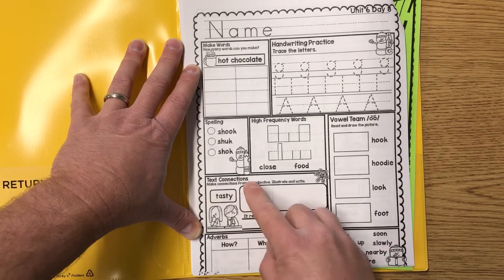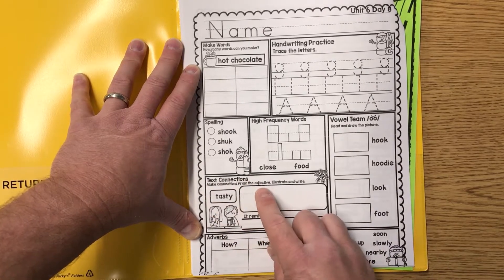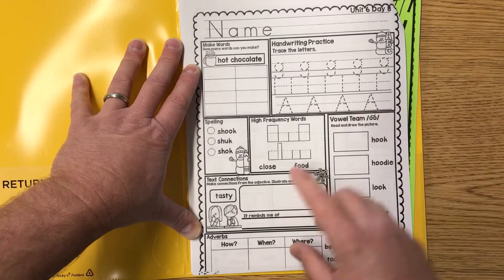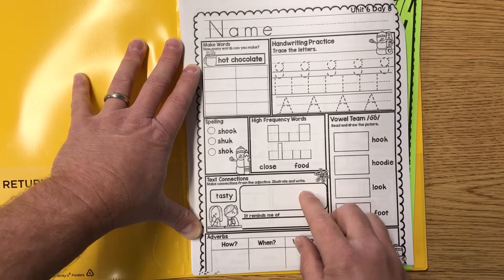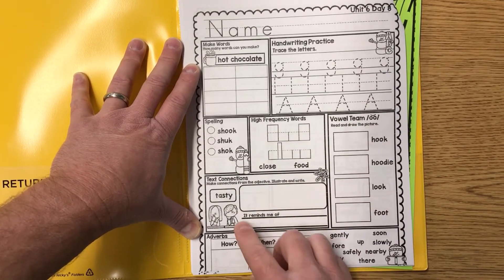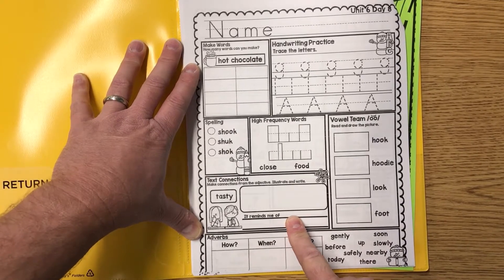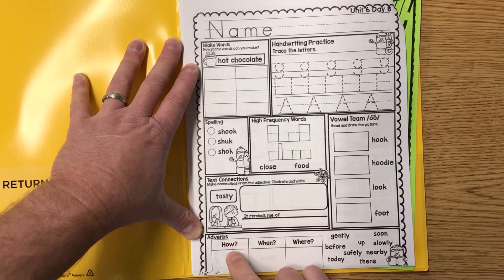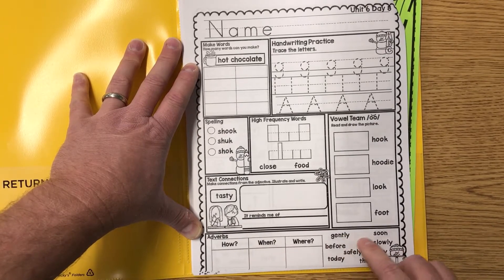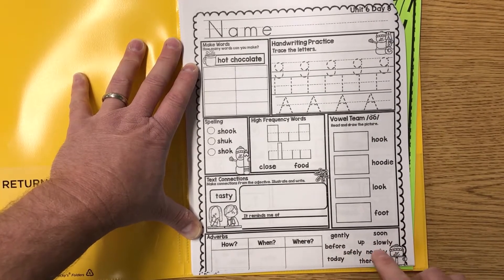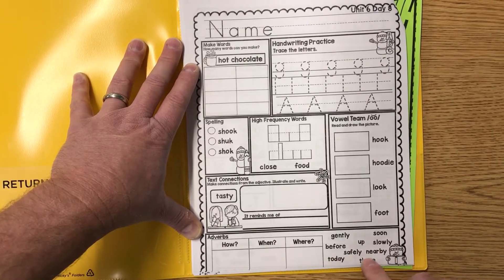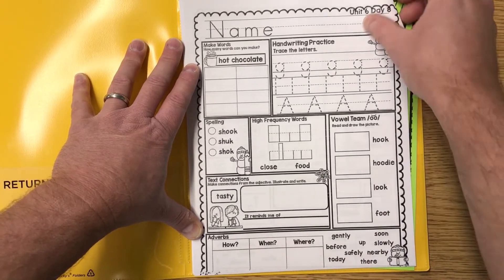Go ahead and read and draw the picture. Text connections: make connections from the adjective. The adjective is 'tasty' - it describes something. Write something that is tasty and it reminds me of, maybe a cookie. Cookies are tasty. Adverbs: we have how, when, and where - gently, soon, slowly, before, safely, nearby, today, and there. Where do you think they would belong?